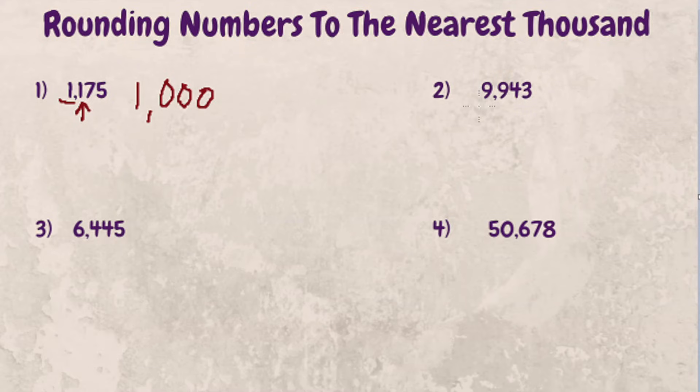So nine is our digit in the thousandth place. Nine is the digit to the right. Five or greater means you round up, so this nine here becomes ten. So nine thousand nine hundred and forty-three rounds to ten thousand.